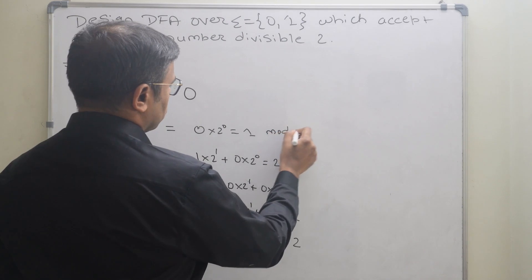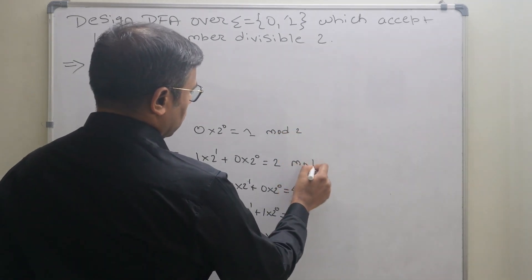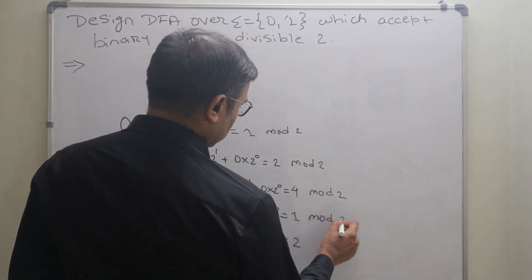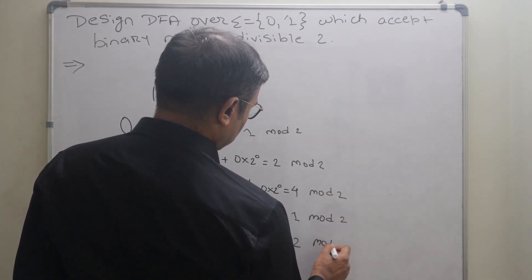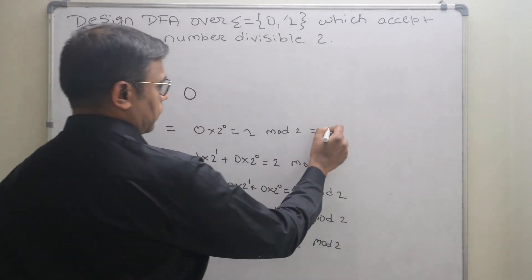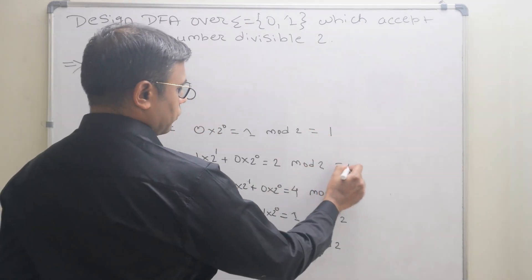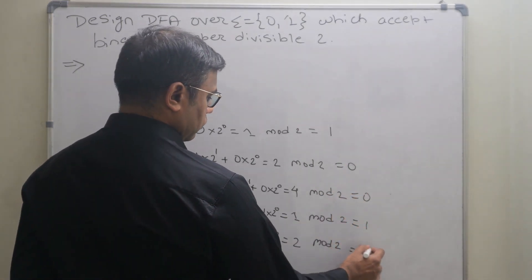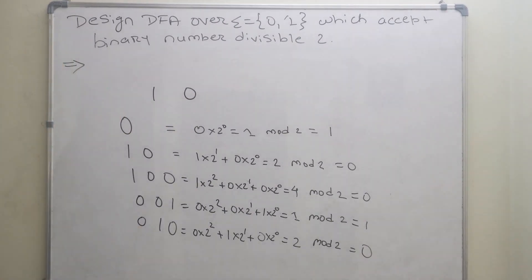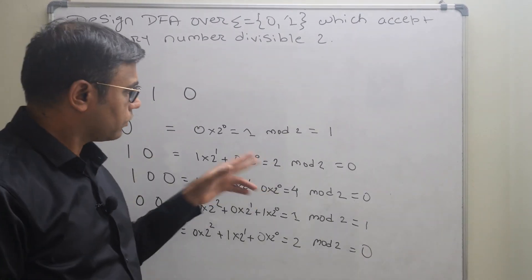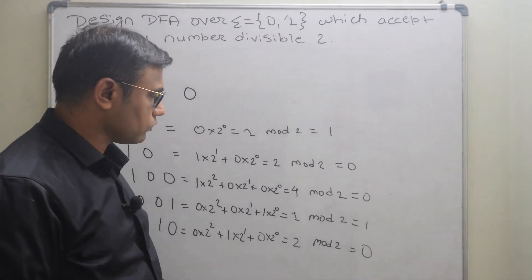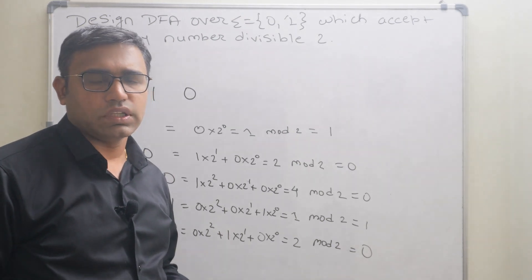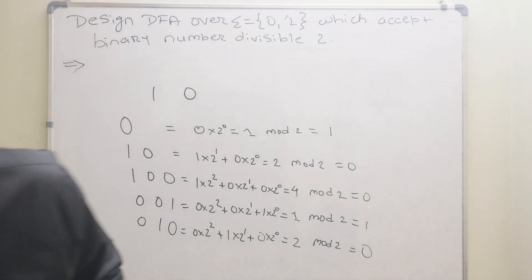Now if we perform mod 2 on these values: 0 mod 2 is 0, 2 mod 2 is 0, 4 mod 2 is 0, 1 mod 2 is 1, 2 mod 2 is 0. You will find there are only two possible remainder values: 0 and 1. So we will use two states — the first state represents remainder mod 0, and the second state represents remainder mod 1.